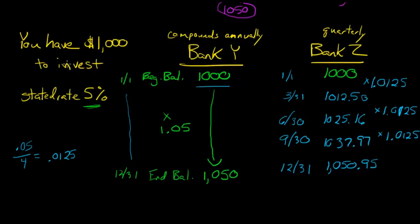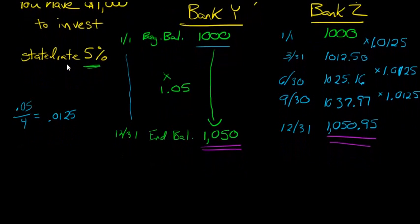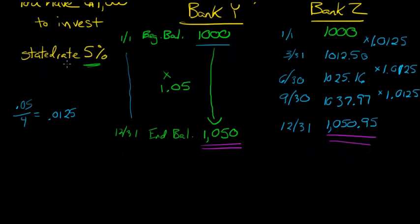So, if you compare these two numbers, you see that you end up with an additional $0.95 for Bank Z. Now, that might not seem like much, but we're just talking about $1,000 here. Imagine if we're talking about millions or something. This could easily add up and be a significant difference.